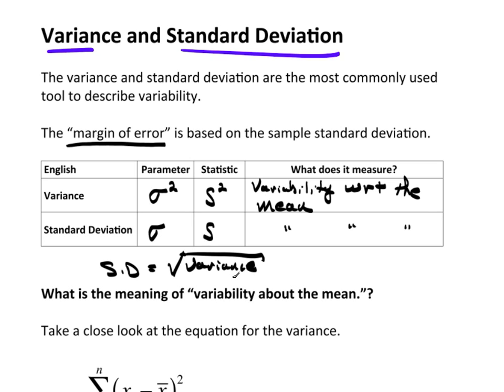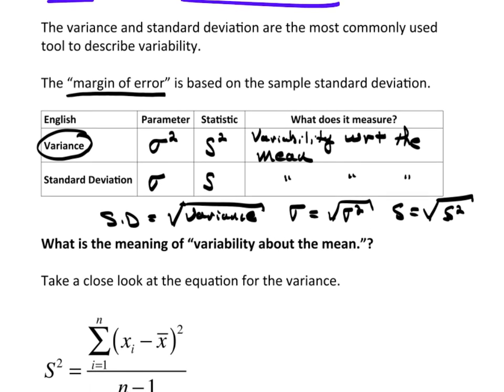So the calculation, the equation is typically for the variance, and then simply take the square root of it. Because sigma obviously is equal to, I'm sorry, the square root of sigma squared, just as S is equal to the square root of S squared. So typically, the calculation is for the variance, especially if you're doing it by hand. And then the last step would be to take the square root.